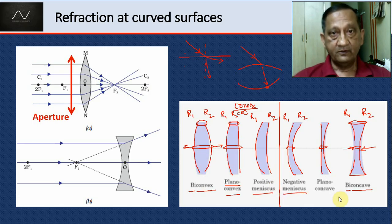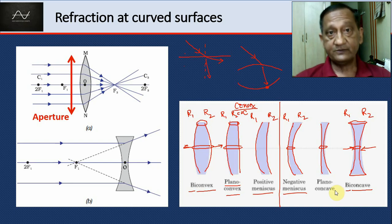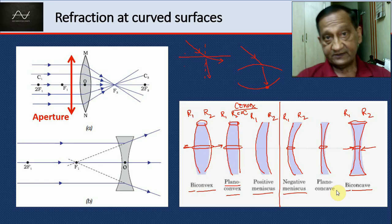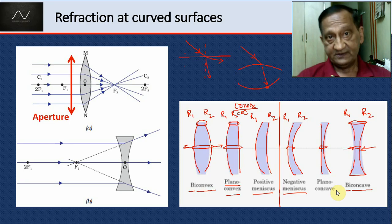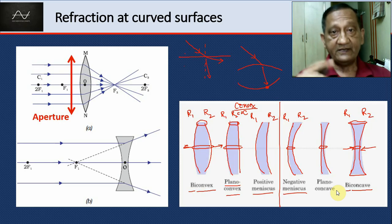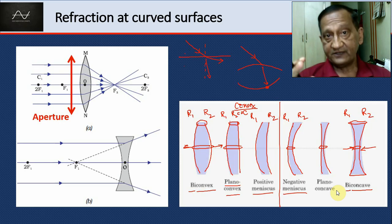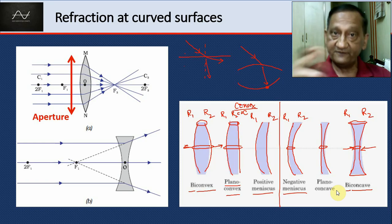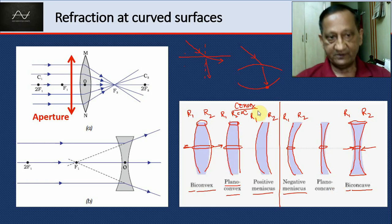For a lens there are two surfaces. So if a ray comes and strikes one surface, it will hit the second surface also. There are two refractions and the final image is created after these two refractions. The object for the second refraction is the image formed by the first refraction.